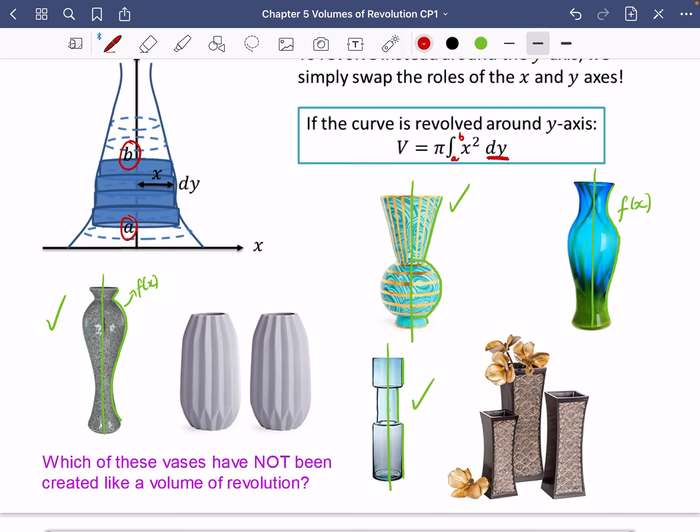Now, these last ones cannot be done like a volume of revolution. And the reason why is because this one has got all of these kind of ridges on it. And when we do these volumes of revolution, you'll notice that this one here is smooth, this one here is smooth, this one here is smooth. They've got to be smooth surfaces for it to be able to be a volume of revolution. This one is not going to be a volume of revolution because it's smooth. And last of all, this one is not going to be a volume of revolution because it doesn't have that kind of cylindrical property to it. As you look over in these diagrams, they're all made up of cylinders. This one, you can't think about this being made up with cylinders because it's got this square shape as we move down here.